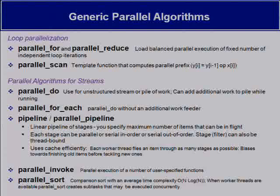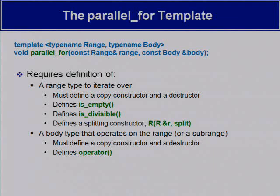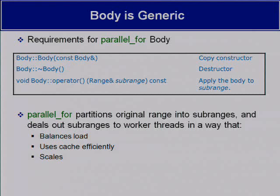The parallel_for, by definition, requires you to specify a range and a body. The body is generic - we're going to have a copy constructor and a destructor. Then the body of this generic will be applied to a certain range or sub-range. The range is indicated, and given the limited time, we'll go to an example.